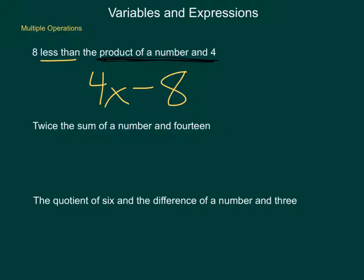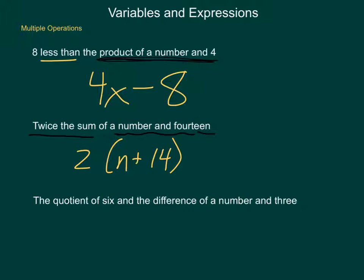Let's look at the next one: 'What is twice the sum of a number and 14?' We start with the sum of a number and 14. Sum denotes addition, so we have n plus 14. Once we have this sum, we need twice that value. Twice denotes 2 times that quantity, so we can write it as 2 times (n plus 14), or simply 2(n plus 14). This illustrates the need for a large English vocabulary to translate between English and mathematical representations.